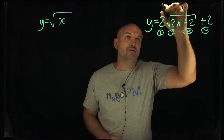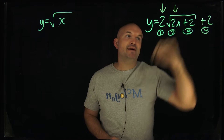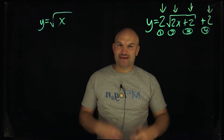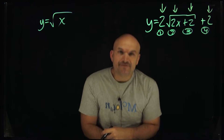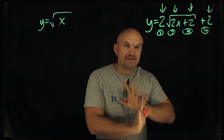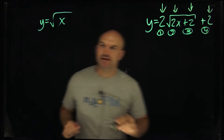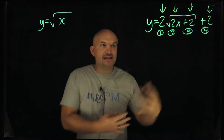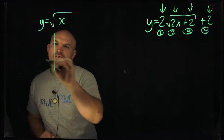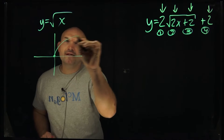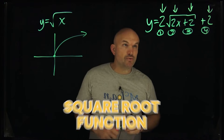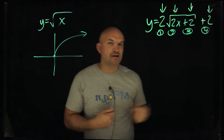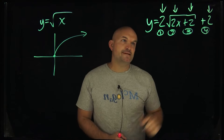I have four transformations labeled for you. I'm multiplying by 2, multiplying by 2 again, adding a 2, and adding 2. We have to ask ourselves: what is the difference between these? Because these are not the same transformations. I'm going to show you exactly what each transformation is so you can recognize how to graph the square root function, and look at some comparisons and commonalities between them.